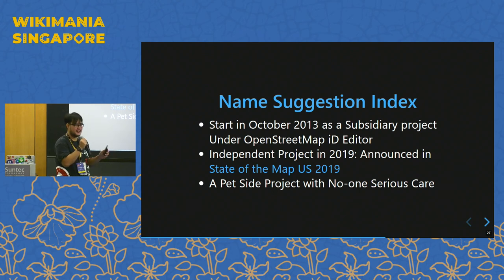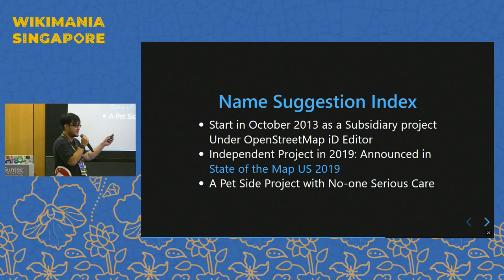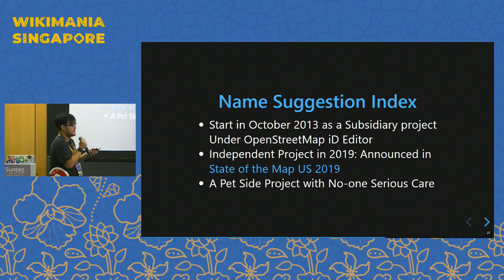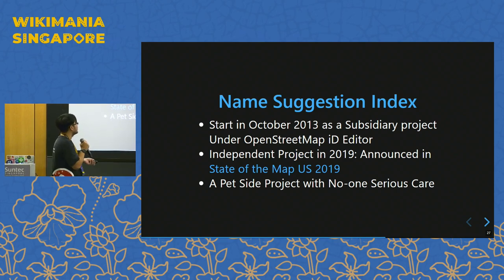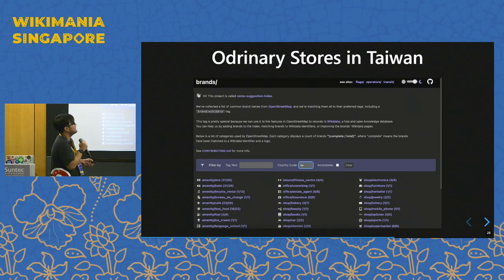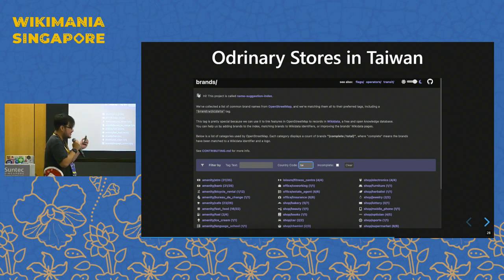This is a project that is a cooperation between the OpenStreetMap and Wikidata communities. They use this project called Name Suggestion Index to standardize some brand chain tags on both Wikidata and OpenStreetMap. It was announced at State of the Map US 2019. It was once a pet project, but now it has significant involvement and investment. Someone has maintained some chain stores in Taiwan using the Name Suggestion Index project.